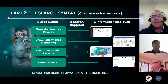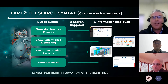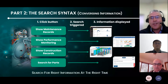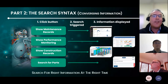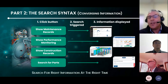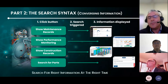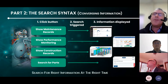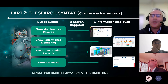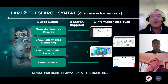The search syntax, which I mentioned, is the key component that we can embed. You click a button, search for information and information is displayed at the asset. For instance, you could show maintenance records, performance monitoring, construction records, or even search for parts and components. Some manufacturers are now cataloging their product catalog with VBIS components, which is really a great step forward.